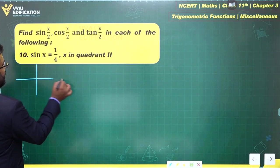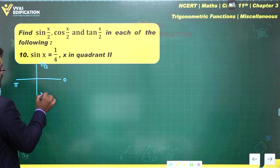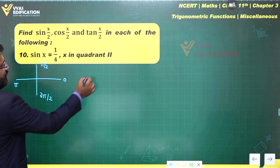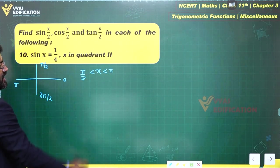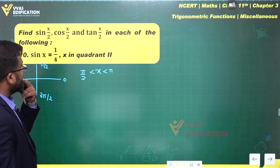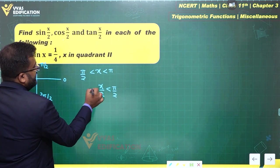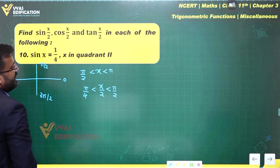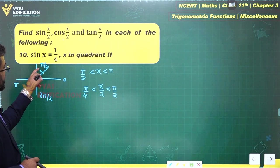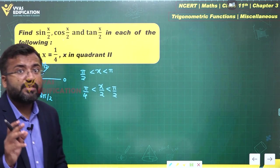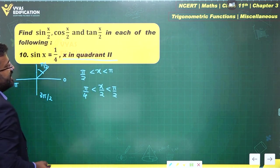In the second quadrant, x lies between pi/2 and pi. Since x is in that range, x/2 will be between pi/4 and pi/2, which means x/2 lies in the first quadrant.